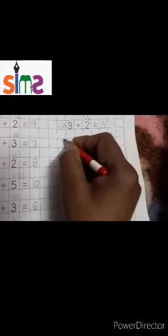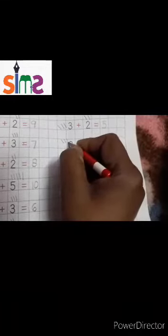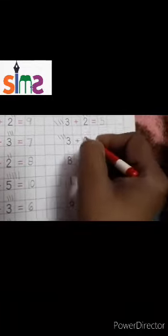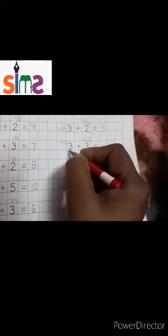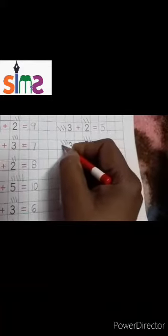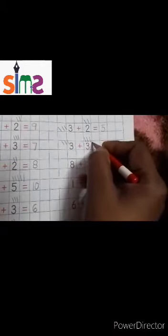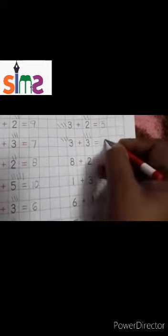Three: one, two, three. Three: one, two, three. Count all the lines: one, two, three, four, five, six. So three plus three is equal to six.